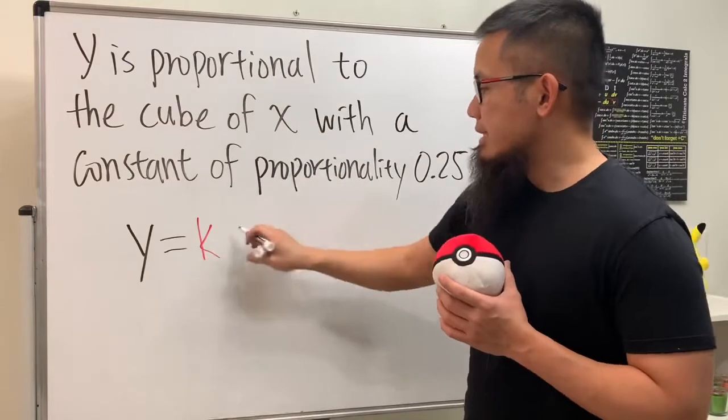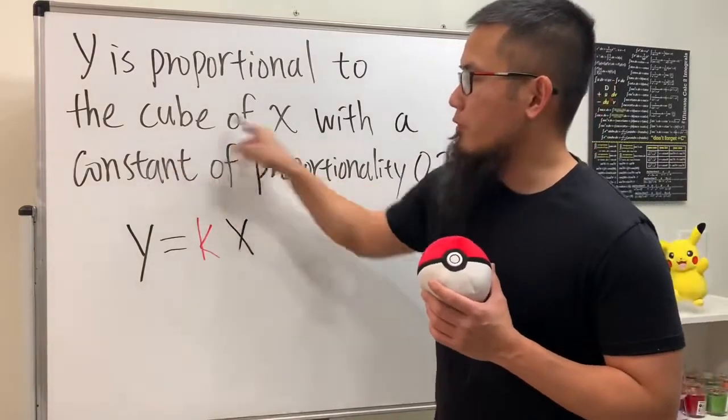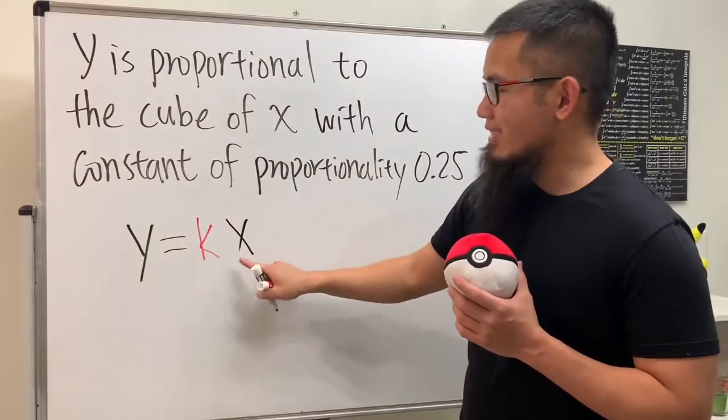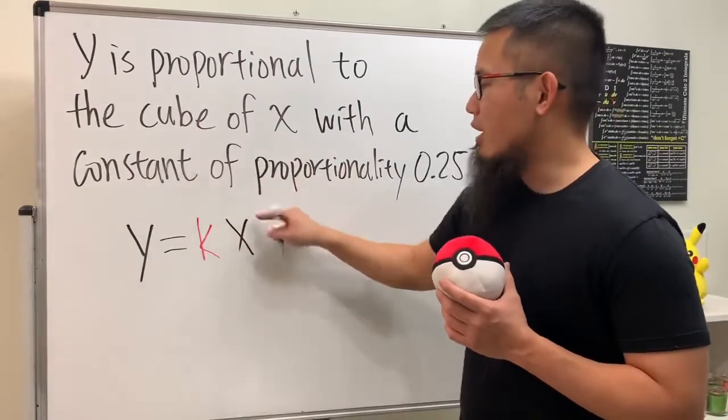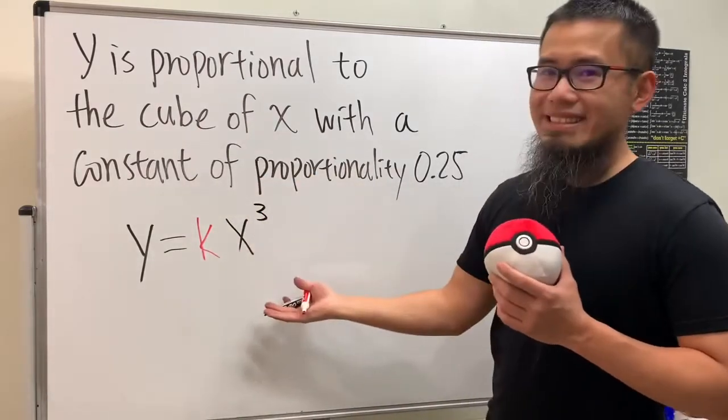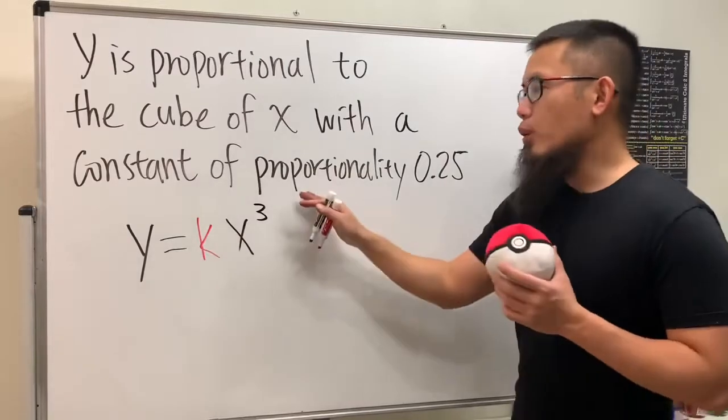But not just x itself. It's the cube of x, so you actually have to put down x to the third power, like this. But we're not done yet because we know that the constant of proportionality is 0.25.